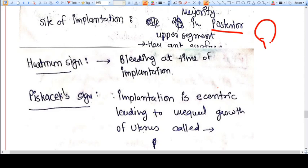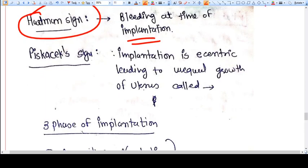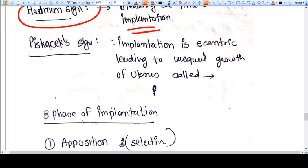The patient may come with a history of sexual intercourse and slight bleeding. This is called Hartman sign, which is due to bleeding at the time of implantation. Another is Pikacis sign. For example, this is a uterus and this is its endometrium. When implantation happens here, the growth of uterus will be asymmetric.